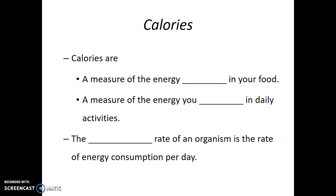So how much energy is stored in the food that we eat? We use a specific unit of measure known as the calorie to discuss this. Calories measure the amount of energy stored in the food that we eat. We can also use calories as a measure of the energy we expend in daily activities. The calories we get from consuming food and the calories we spend doing work should be in balance if our goal is to maintain a constant body weight. If there is an imbalance, we will either lose or gain weight based on the direction of the imbalance.